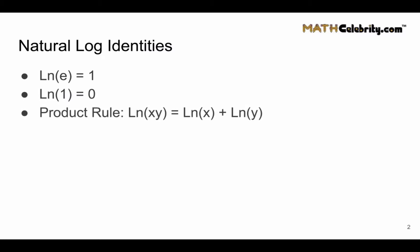Now the product rule. If you multiply two numbers and take the natural log of those, it's the same as taking the natural log of the first number plus the natural log of the second number.